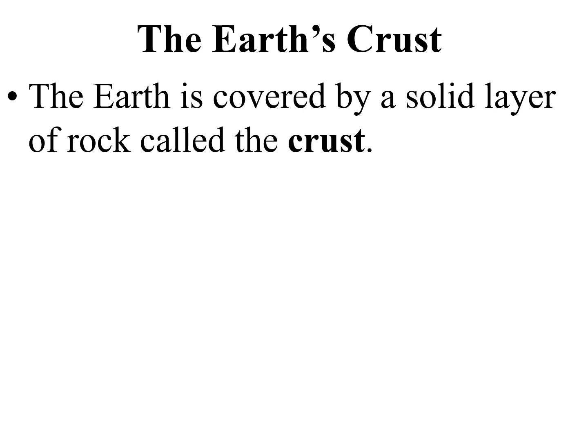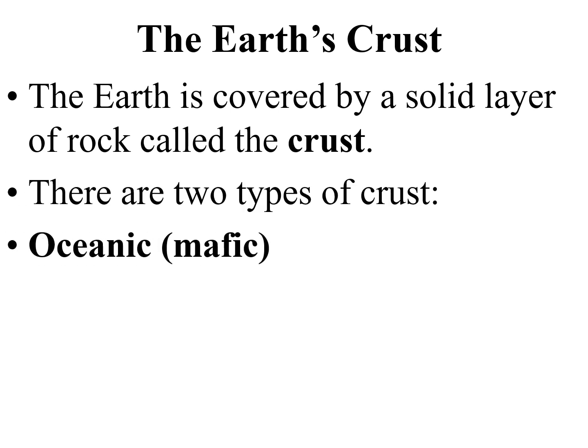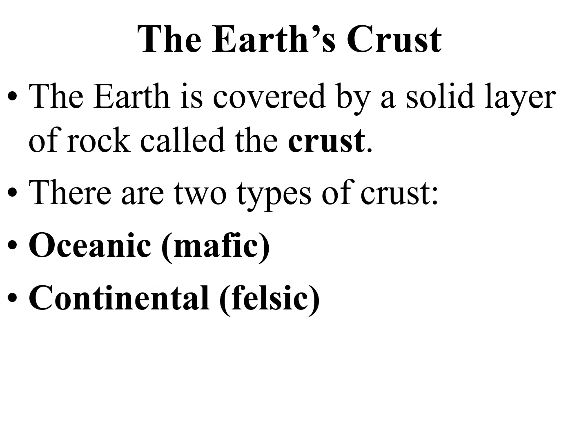The Earth is covered by a solid layer of rock called the crust. There are two types: oceanic crust, which is mafic, and continental crust, which is felsic. The oceanic rock we think of as the ocean floor is basalt. The felsic continental rock most associated with continents is granite.